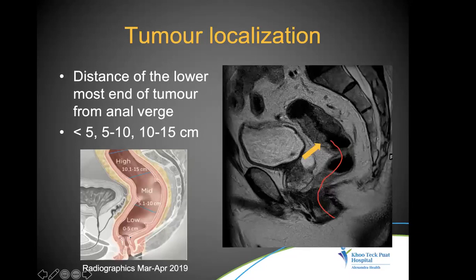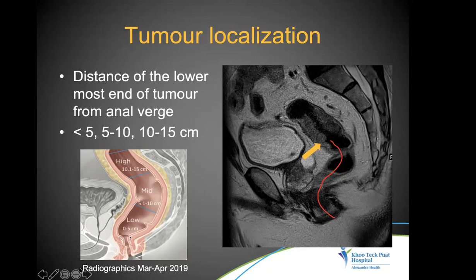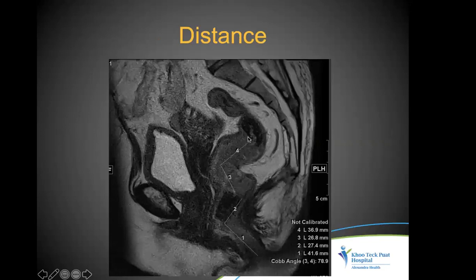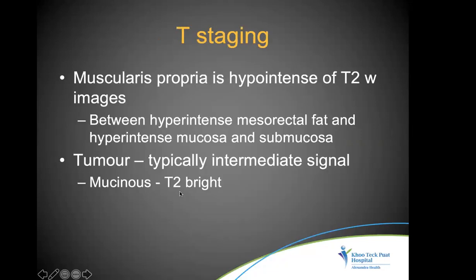Tumor localization categorizes the tumor as high, mid, or low rectal based on the distance of the lowermost end of the tumor from the anal verge, measured along a curving line using three straight-line segments. This determines whether the tumor is mid, high, or low rectal. We then measure the length of the tumor before proceeding to T-staging.